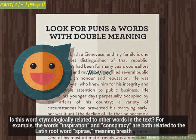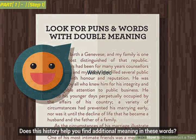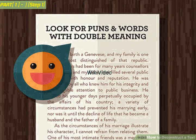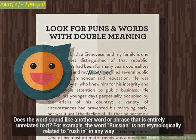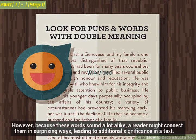Ask yourself: is this word etymologically related to other words in the text? For example, the words 'inspiration' and 'conspiracy' are both related to the Latin root word 'spirae,' meaning breath. Does this history help you find additional meaning in these words? Does the word sound like another word or phrase that is entirely unrelated to it? For example, 'rushin'' is not etymologically related to 'Russian' in any way. However, because these words sound a lot alike, a reader might connect them in surprising ways, leading to additional significance in a text.